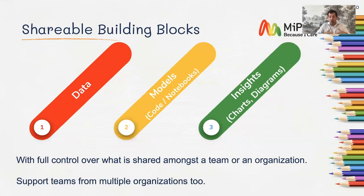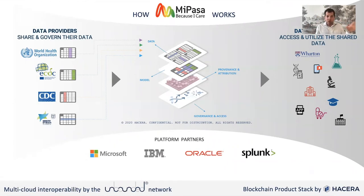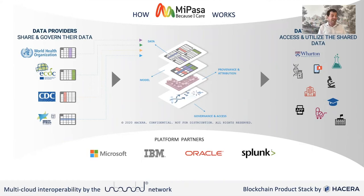We wanted full control over what is being shared among a team, an organization, or across multiple teams. It's actually more difficult to do it in a scalable way without sharing. We have the model, the provenance attribution — so we know who shared what, with whom, and for how long — and we have full governance and access underneath. Multi-cloud support from day one: we work with Microsoft, Oracle, IBM, and Splunk. We have very scalable infrastructure abstraction so you can grow with the demand.